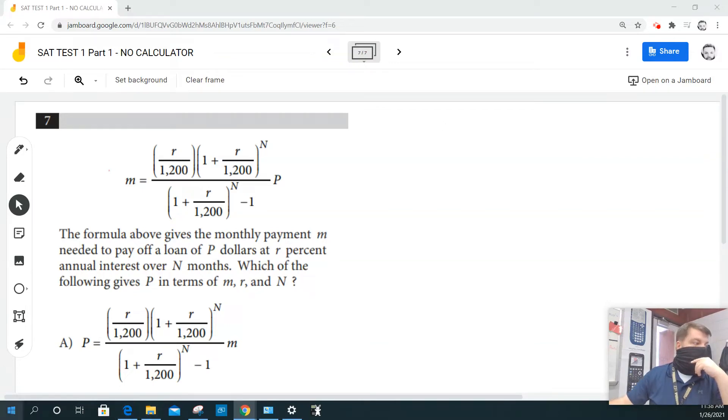So on the next one, it says the formula above gives the monthly payments M needed to pay off a loan of P dollars at a rate R, which is the percent annual interest over N months. Which of the following gives P in terms of M, R, and N?